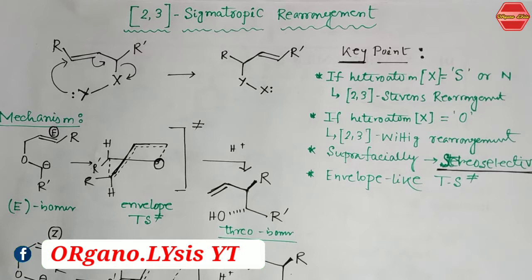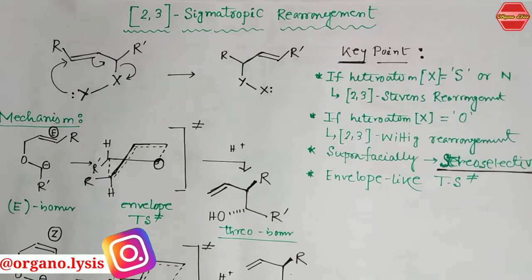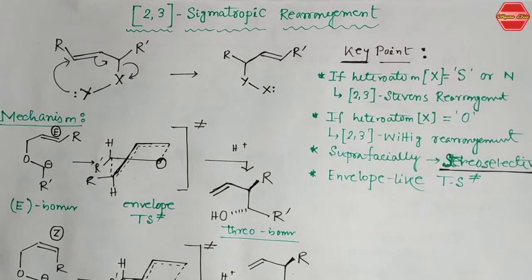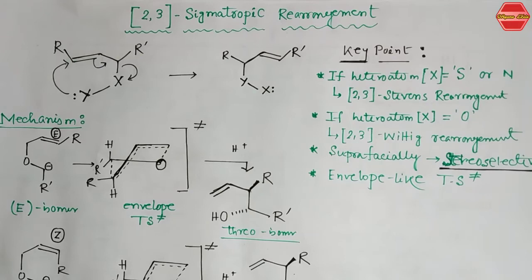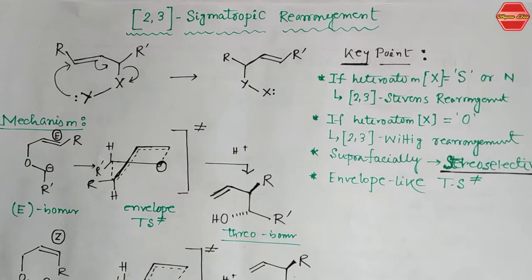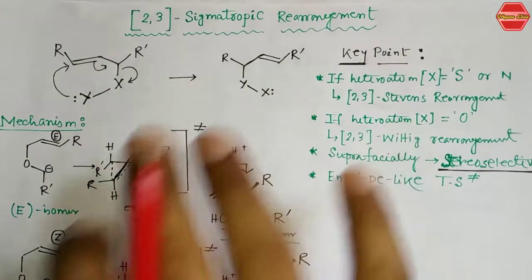Welcome to Organolysis. This is rearrangement reaction part 11 — we've already made 10 videos on different types of rearrangement reactions. In this video, we are going to learn about the 2,3-sigmatropic rearrangement, which is very important for CSIR-NET and GATE exams as questions are frequently asked from this topic. We'll first cover the rearrangement mechanism, then move on to examples.